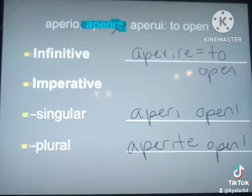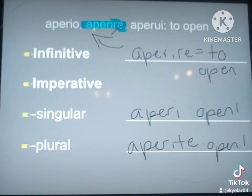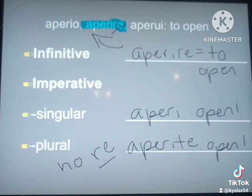So we're always using our second principal part, chopping off RE. And then for the plural, we're adding TE for the plural imperative.